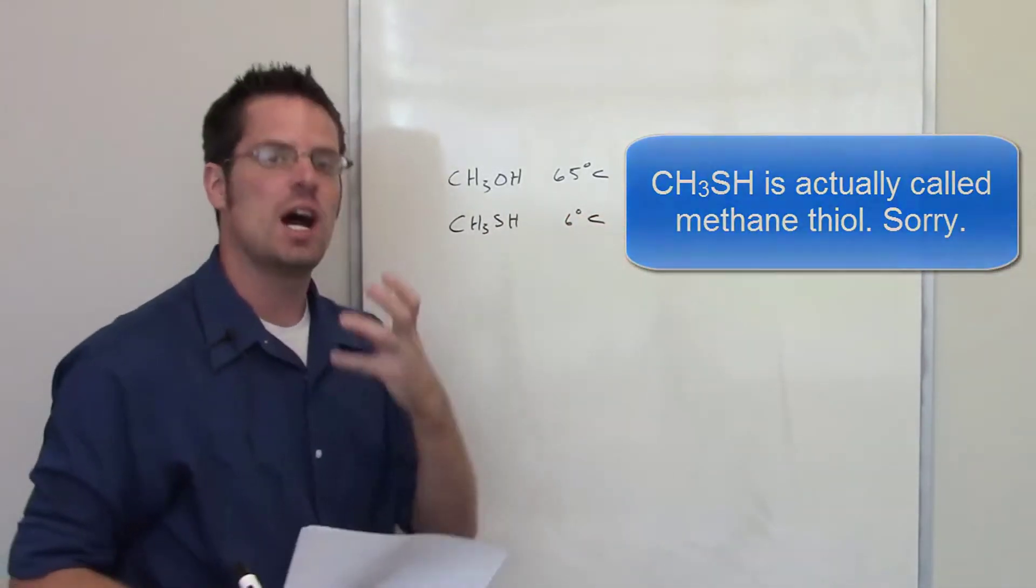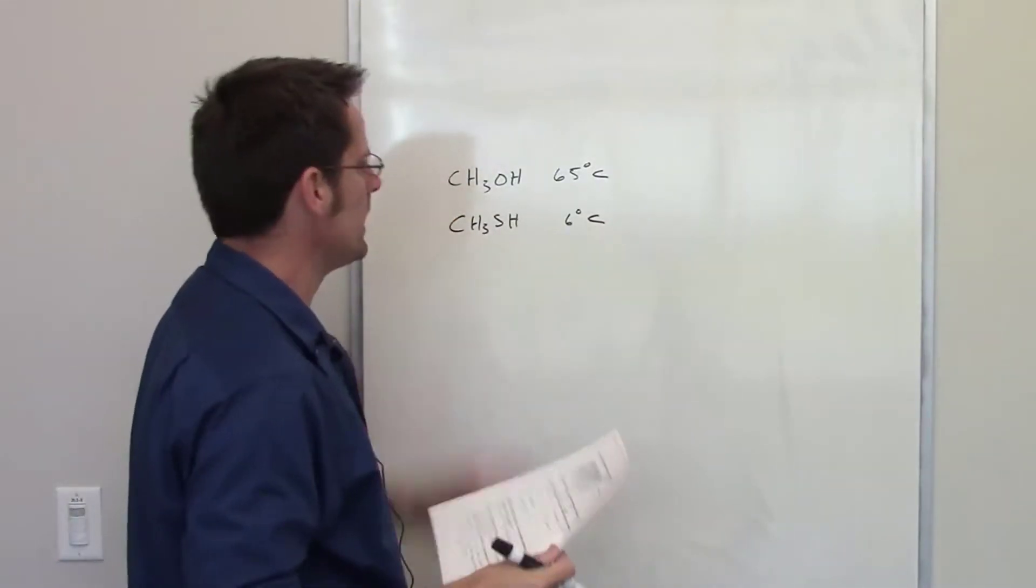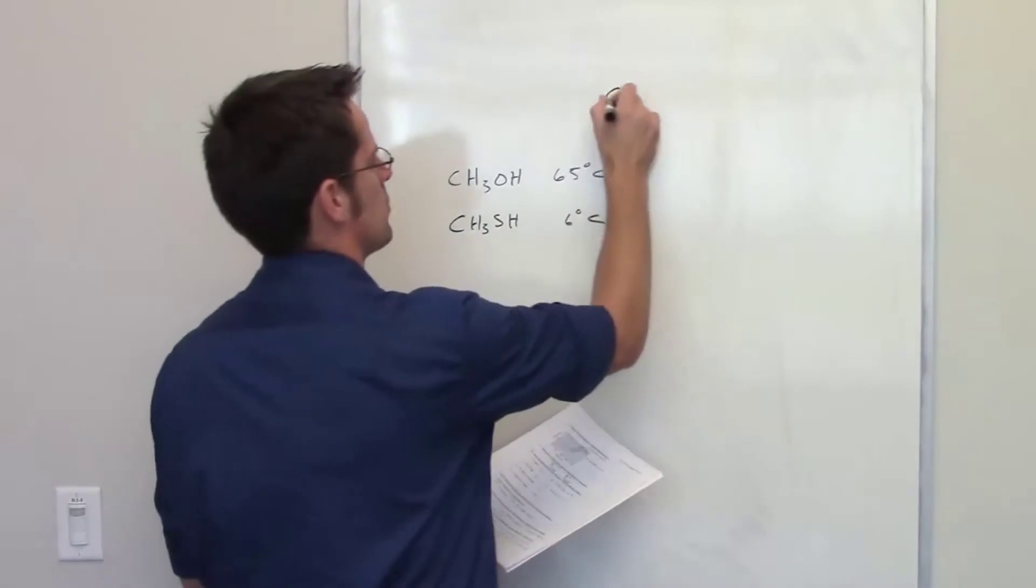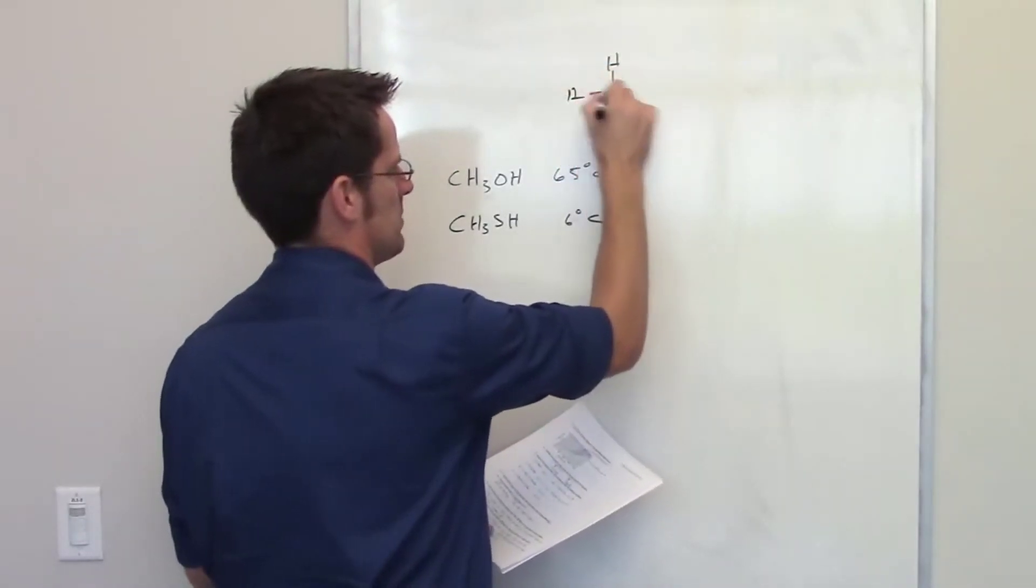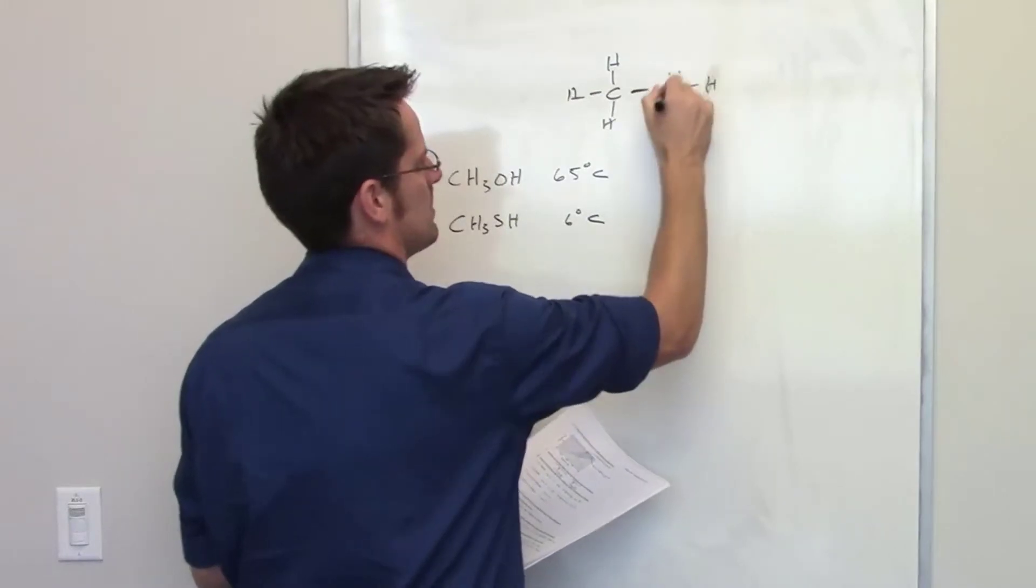In other words, methanol has a much higher boiling point than methyl sulfide. What accounts for that difference? Well, hopefully you can see if you draw out the Lewis structures for these molecules that the only difference really is substituting an oxygen for a sulfur going from one to the other.